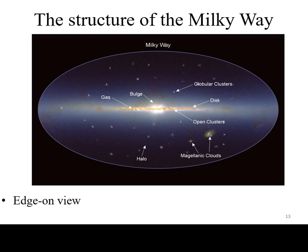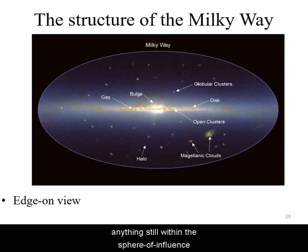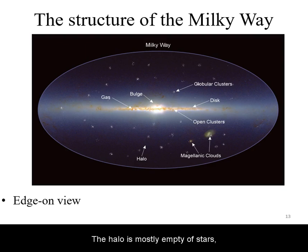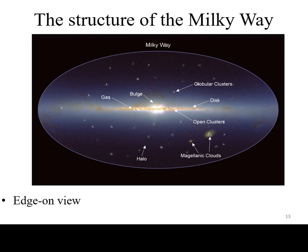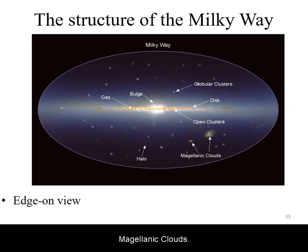Surrounding the disk is the halo of the galaxy. Halo in this context just means anything still within the sphere of influence of our galaxy. The halo is mostly empty of stars and star-forming regions, with the exception of globular clusters, as well as satellite galaxies, such as the small Magellanic clouds.